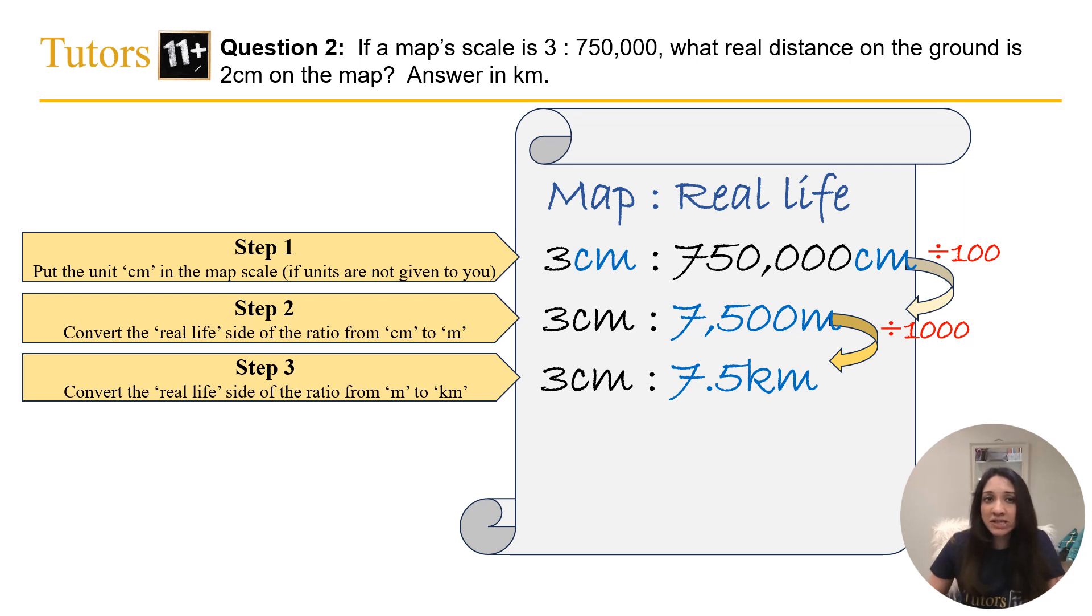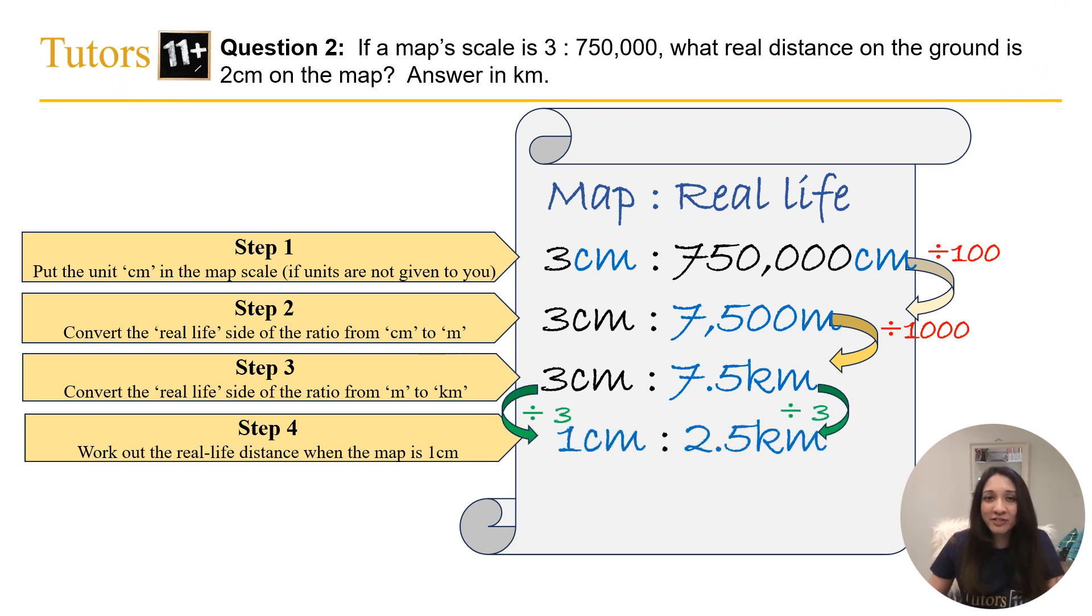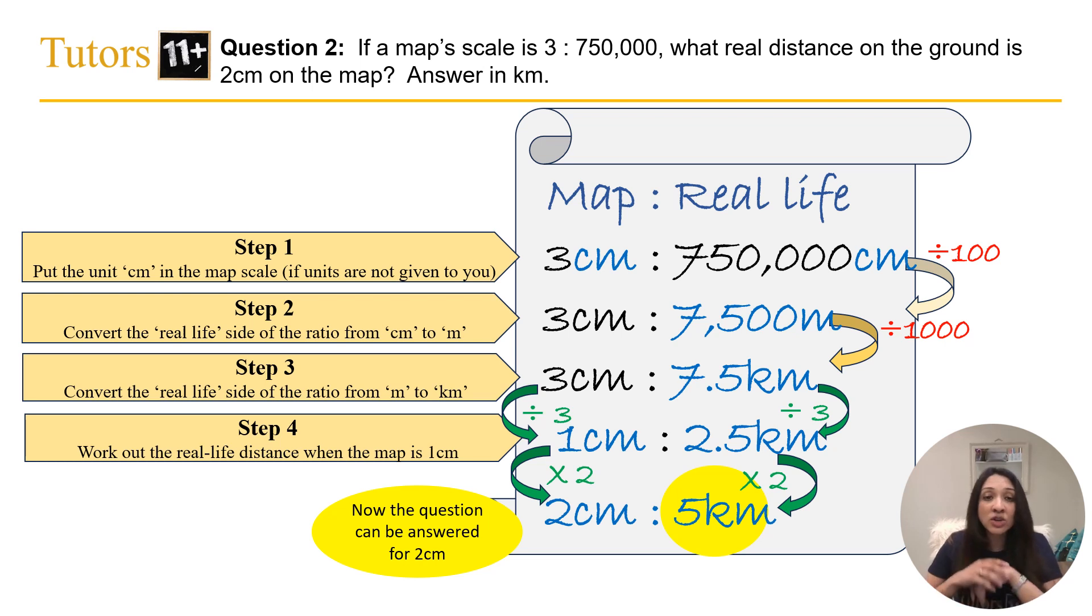To work out 1cm is step 4, which is simply now to divide by 3. 7.5km divided by 3 gives us 2.5km. That is 1cm on the map represents 2.5km on the ground. So to work out what 2cm would be in real life, we can simply multiply this by 2, giving us 5km. And there you have it. Now we've actually answered the question. 2cm on the map is equivalent to 5km on the ground.